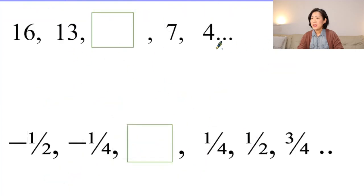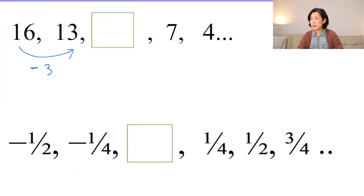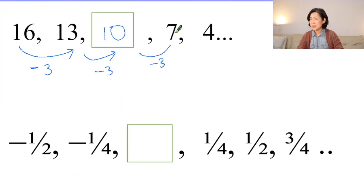Let's have a look at the next one: 16 to 13. The numbers are getting smaller, so it decreases by 3. That's why I'm going to write minus 3. Take away 3 gives you 10, then 10 minus 3 gives you 7. So we can say this number sequence decreases by 3.